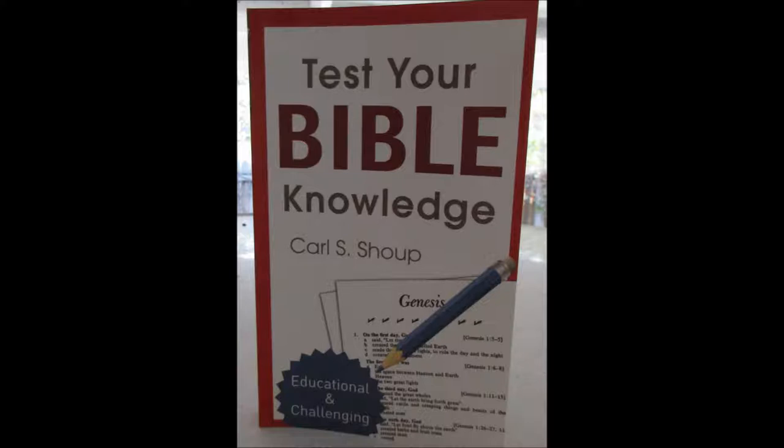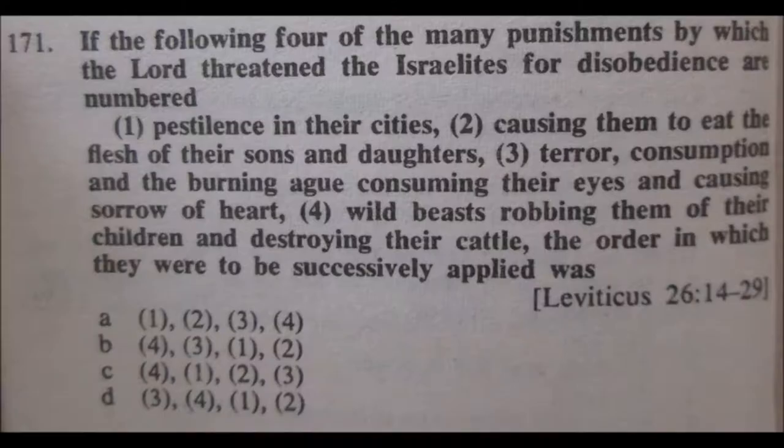The first question, which will be the last one out of Leviticus, is number 171. Of the following four punishments by which the Lord threatened the Israelites for disobedience — one, pestilence in their cities; two, causing them to eat the flesh of their sons and daughters; three, terror, consumption, and the burning consuming their eyes and causing sorrow of heart...